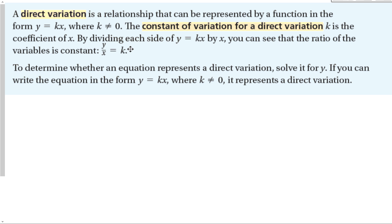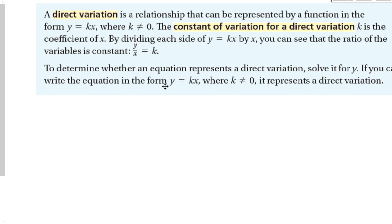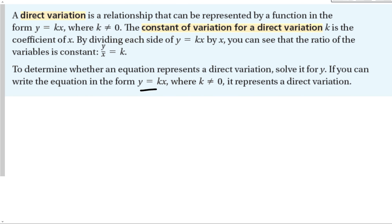To determine whether an equation represents direct variation, solve it for y. If you can write the equation in the form y equals kx, where k is not equal to 0, it represents direct variation. Simply put, direct variation means that as one value — y — goes up, x goes up as well. They vary directly. The constant k is there to make both sides of the equation equal.